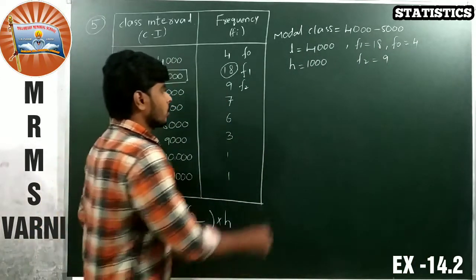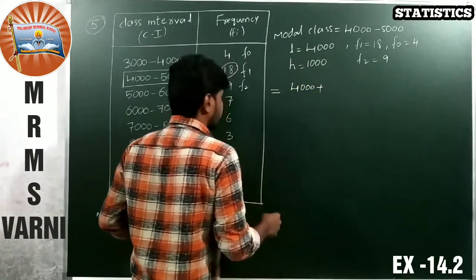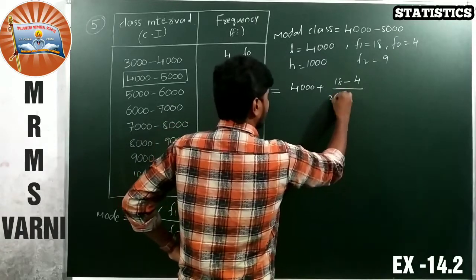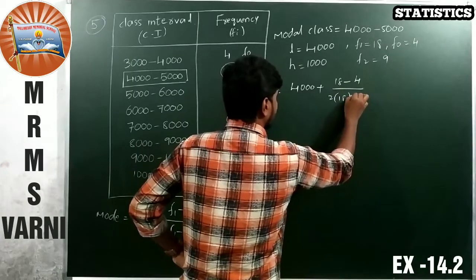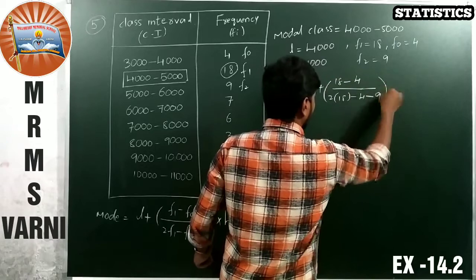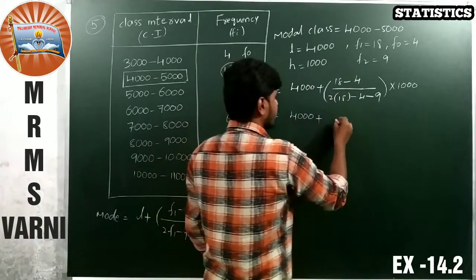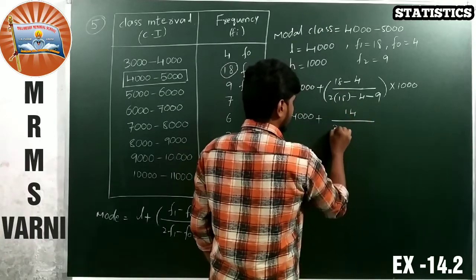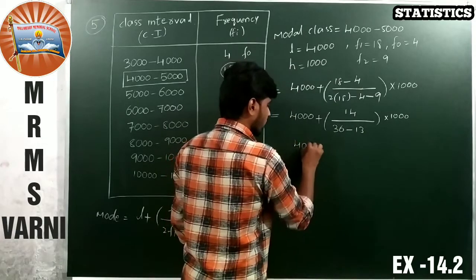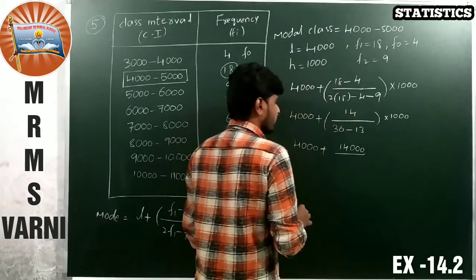F1 is 18, F0 is 4, F2 is 9. So substitute the values in the formula. What are the values? L value 4000 plus F1, 18 minus F0, 4 by 2F1, 2 into F1, 18 minus F0, 4 minus F2, 9 into 1000.